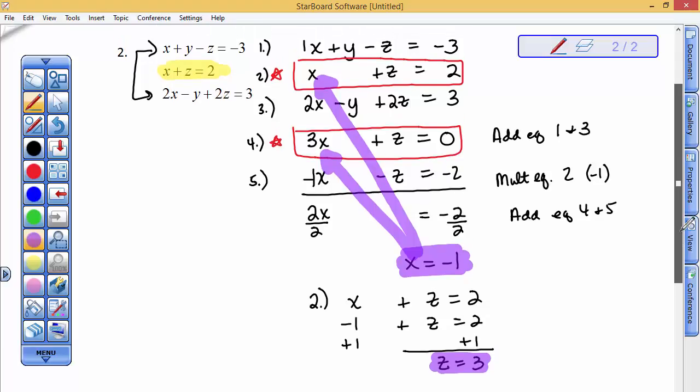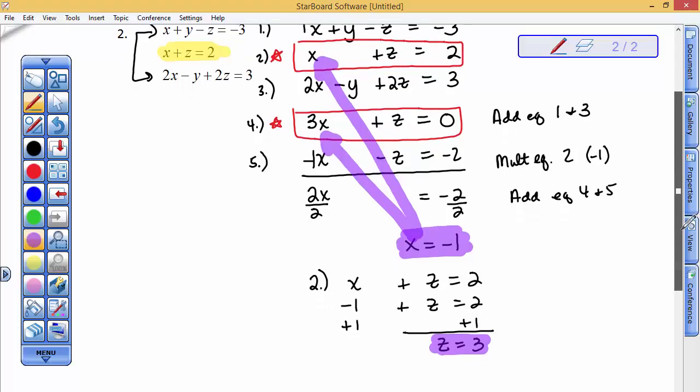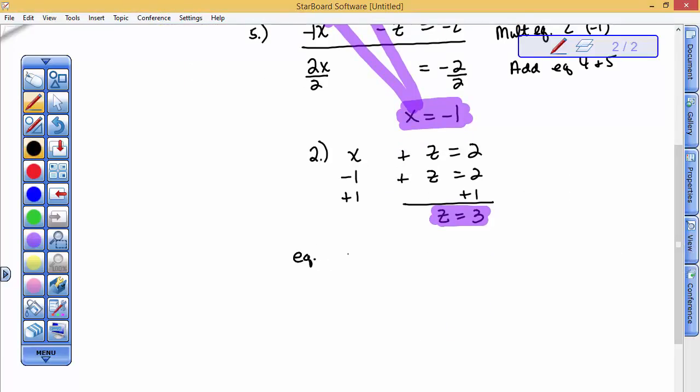Now I'll go back to one of the original equations because I have an answer for X and an answer for Z. It cannot be this equation because it doesn't have the letter Y in it. I'll go into equation 1. Equation 1 reads X plus Y plus Z equals a negative 3. I know X is a negative 1, I know Z is 3. I see that I copied this incorrectly. This was supposed to be a minus Z, so minus 3 here.